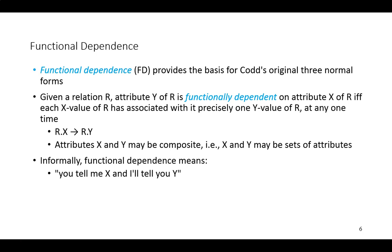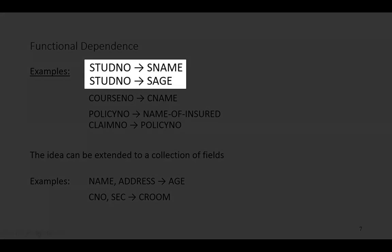Let's look at a few examples to make this point clearer. If you tell me the value of student number, I can tell you the name of the student. If you tell me the value of student number, I can tell you the age of the student. The idea here is that student number functionally determines student name, and student number functionally determines student age.